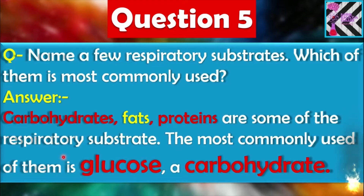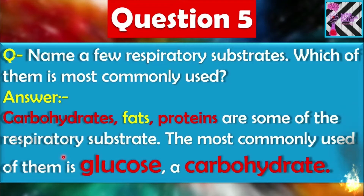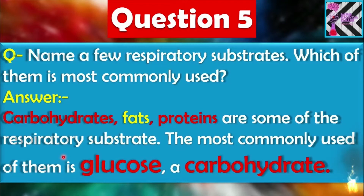Later on, we get energy from fats also. And after that, protein is also part of respiratory substrates — it is not providing us energy but it is repairing our damaged cells. So here are three respiratory substrates: carbohydrates, fats, and proteins, in which glucose is the main carbohydrate which we are getting continuously in our daily routine.